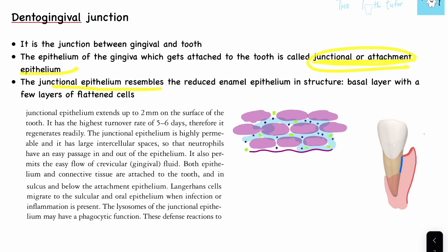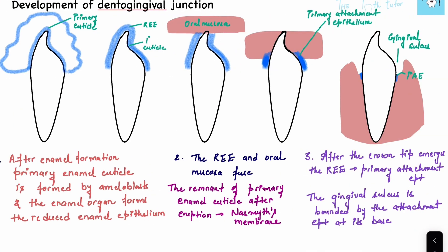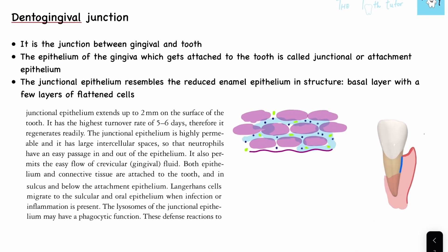The junctional epithelium resembles the reduced enamel epithelium in structure. When a tooth is erupting, after tooth formation has taken place, the ameloblasts on top form a structure called the reduced enamel epithelium — basically a layer over the tooth. The junctional epithelium resembles this reduced enamel epithelium in structure.